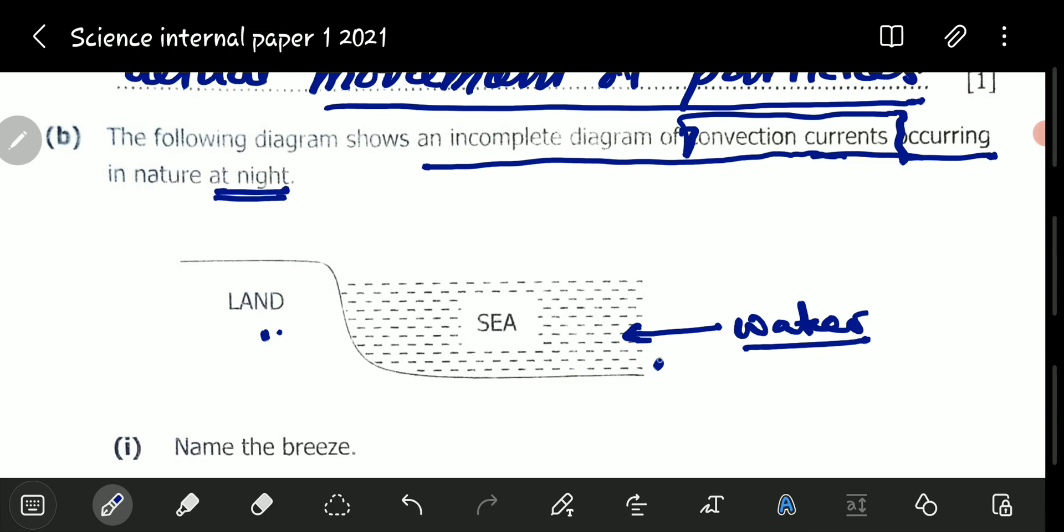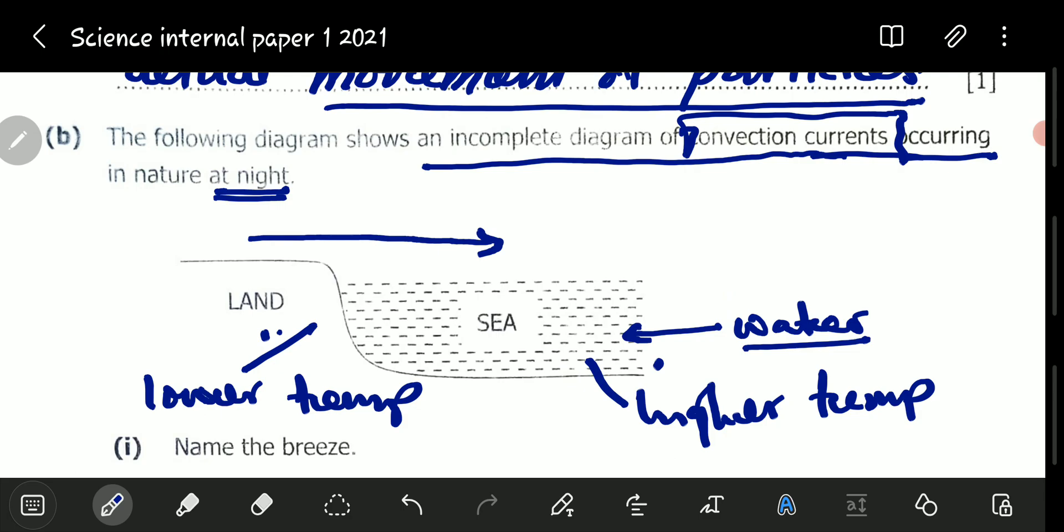Once we remove the source of heat, we depend on the storage capacity of the water and the land. Because of the higher specific heat capacity of water, the water will be warmer or will be at a higher temperature at night.